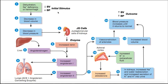Our initial stimulus was decreased blood volume and decreased blood pressure. Our outcome is increased blood volume and increased blood pressure. This is a great example of a negative feedback loop where we reverse the direction of the original stimulus.